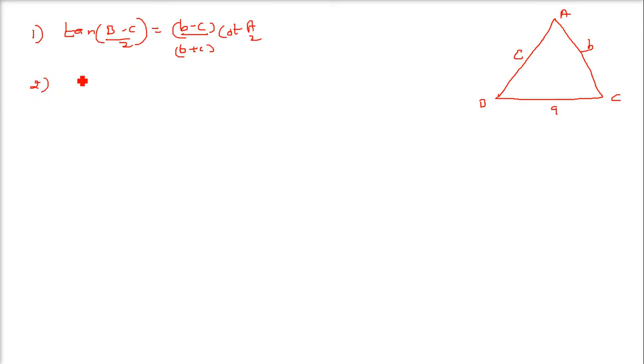Similarly, tan of (a minus b) by 2 will be equal to (a minus b) by (a plus b) into cot c by 2.